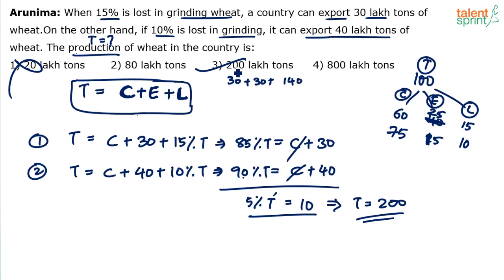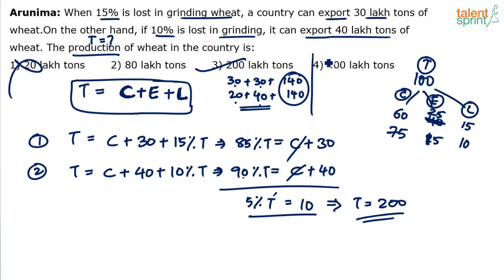In Case 2, when loss is 10%: 10% of 200 is 20. Export is 40. So 20 plus 40 is 60, and 200 minus 60 gives in-house consumption of 140. In both cases, in-house consumption is 140 — which means this is correct. Now for option 4 (800): 15% of 800 is 120, plus export of 30 gives 150, so consumption is 650. But with 10% loss: 10% of 800 is 80, plus export of 40 gives 120, so consumption is 680. The in-house consumption doesn't match — it's not the same.